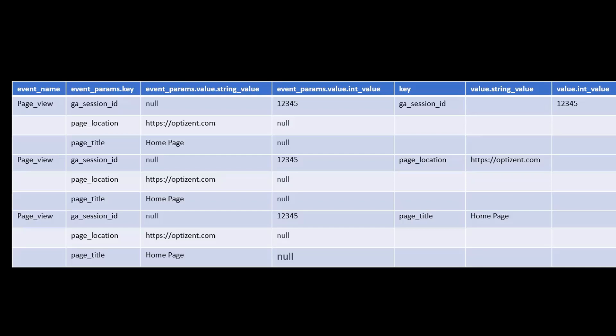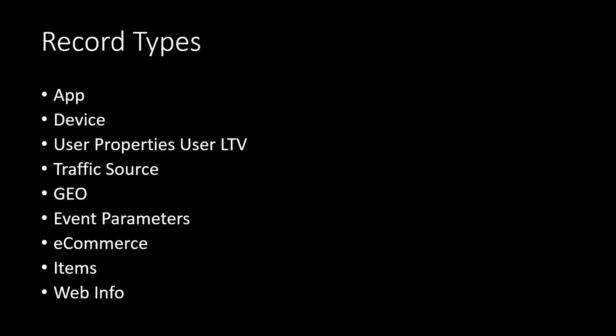We're not going through all the use cases — this session is about making sense of the data. There are several fields in BigQuery that are of type record: App (app information), Device (device information), User Properties, User LTV, Traffic Source, Geolocation, Event Parameters, E-commerce information, Items, and Web Info. These are the various record types you will see.